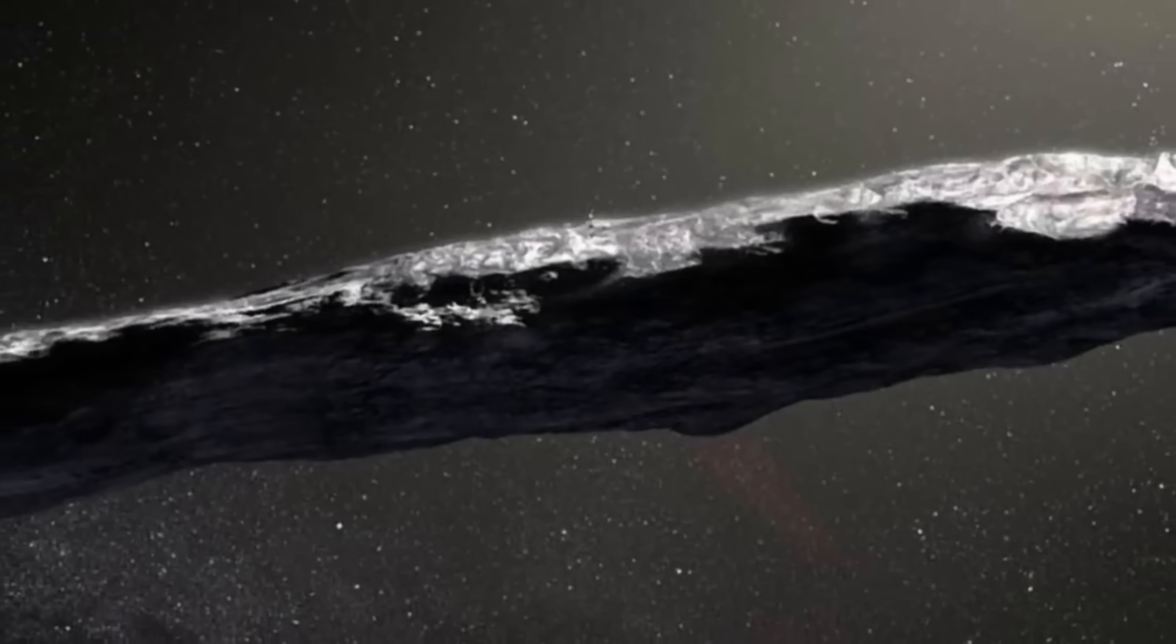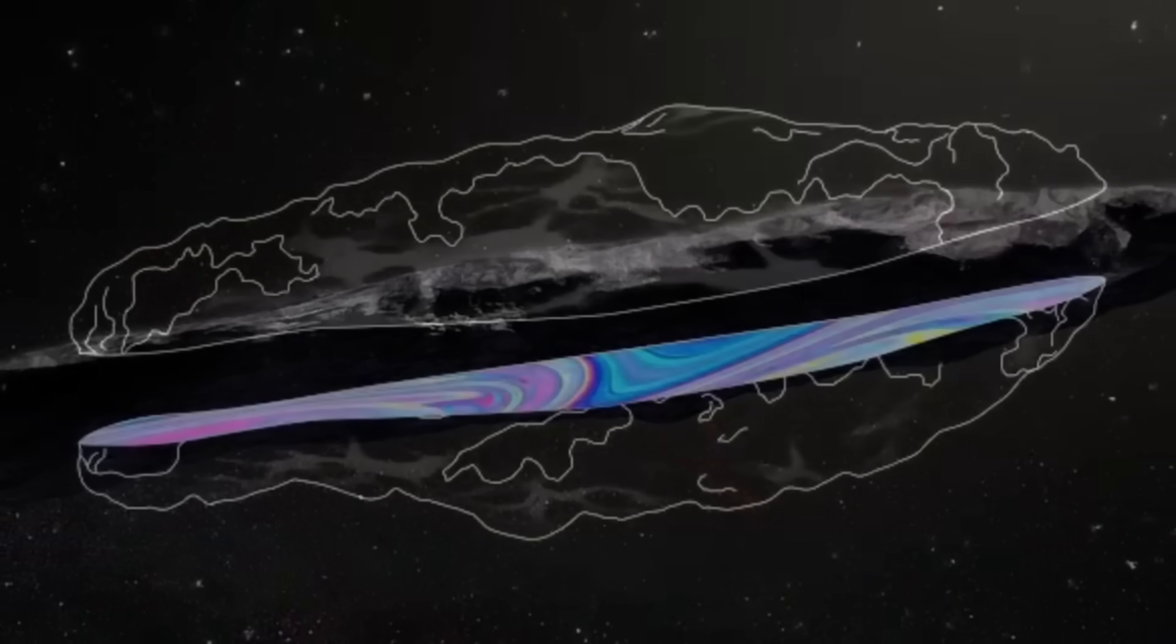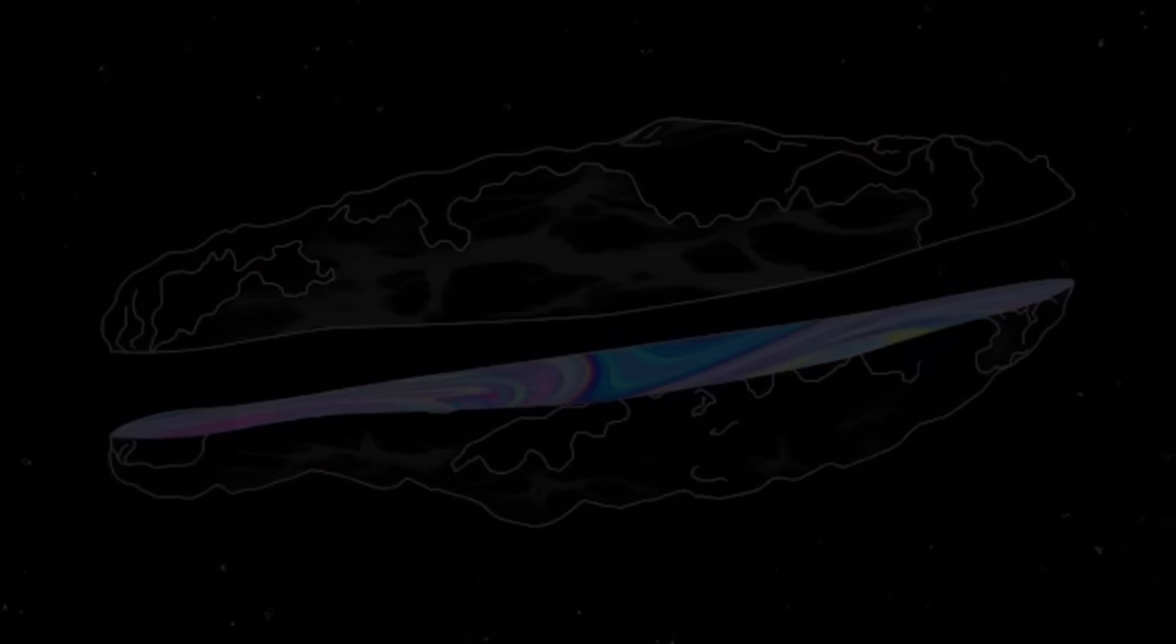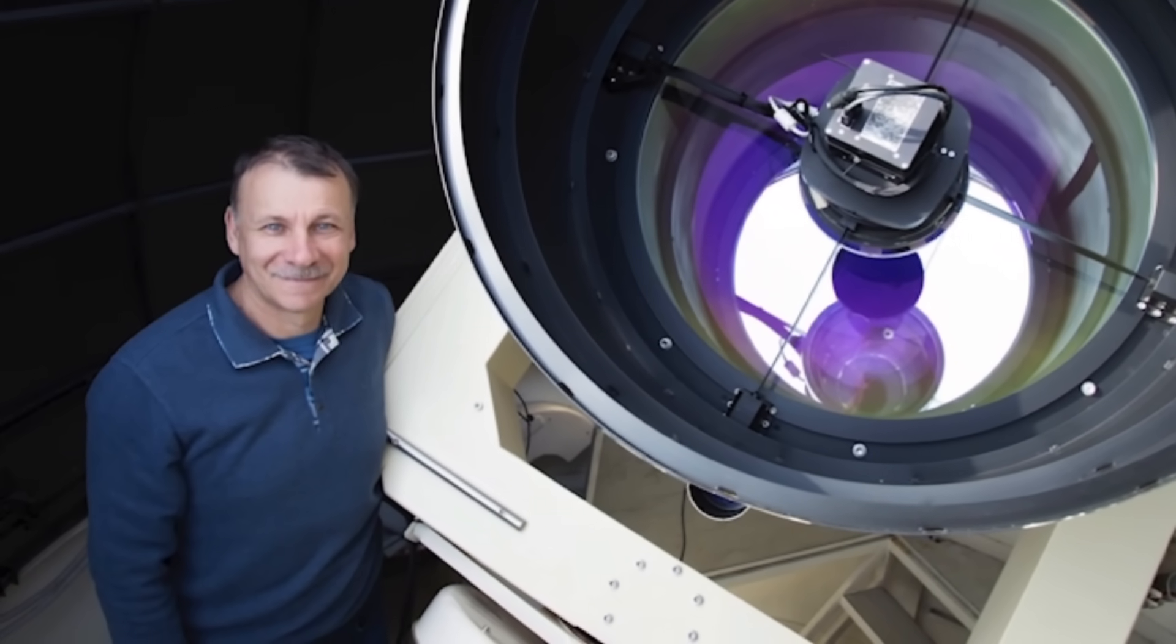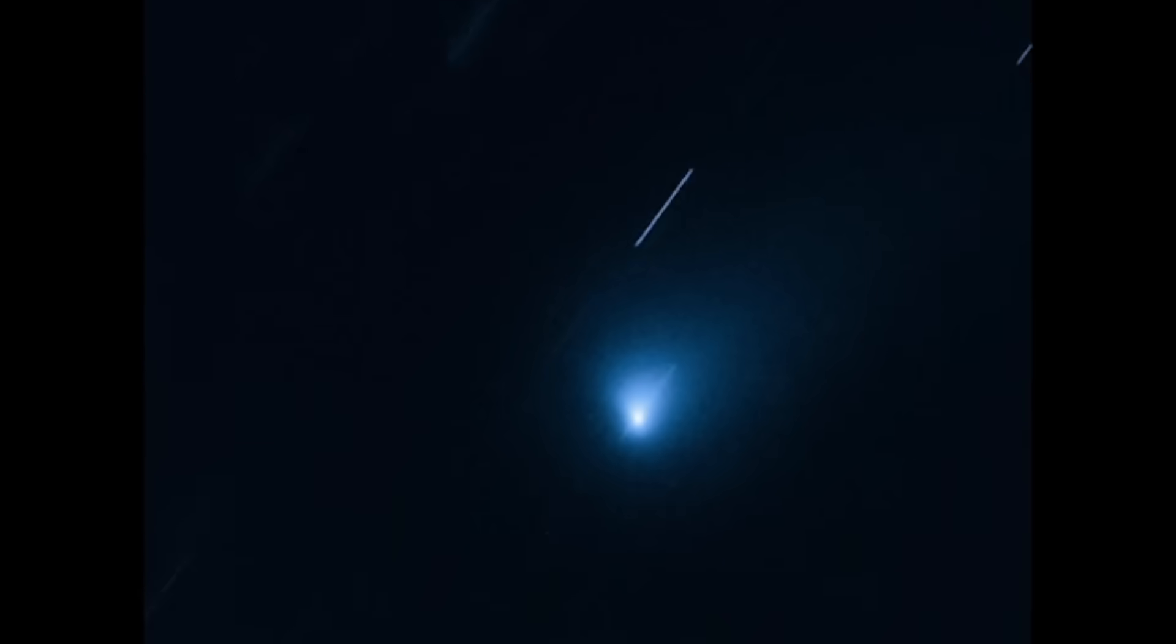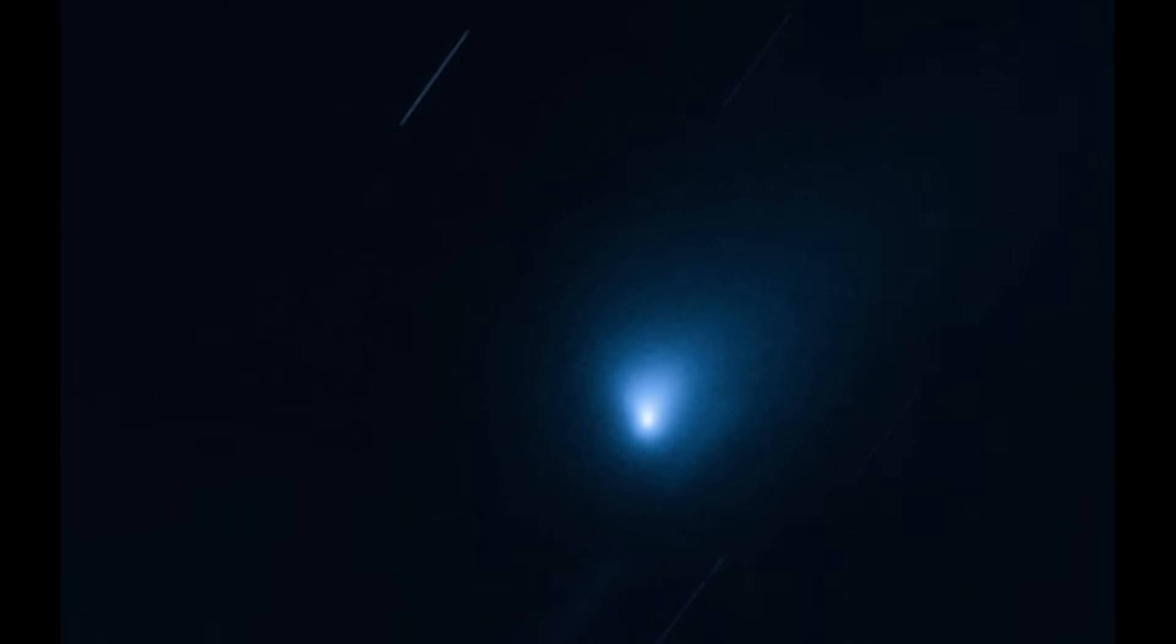But others, like Harvard's Avi Loeb, even suggested it might be an alien spacecraft. Later in 2019, another interstellar visitor, Borisov, was observed. Unlike Oumuamua, Borisov was clearly a comet with a visible tail and composition resembling comets within our solar system.